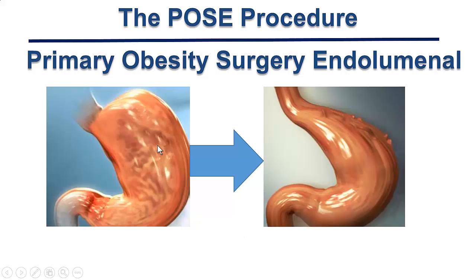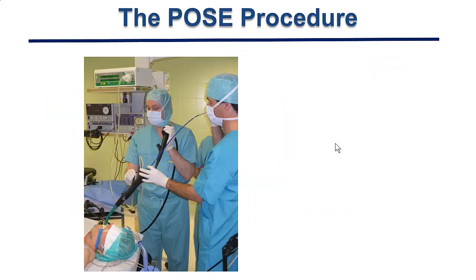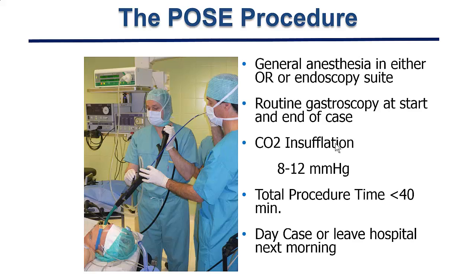POST means we reduce the volume of the stomach endoluminally — that is, with a gastroscopy treatment — by one third of the volume of the stomach. The procedure, as you can see in this picture, is performed under full anesthesia either in the operating room or in the endoscopy suite. A routine gastroscopy is performed at the beginning and at the end of the procedure. We insufflate CO2, which disappears much faster than regular air, and the total procedure time is less than 40 minutes.